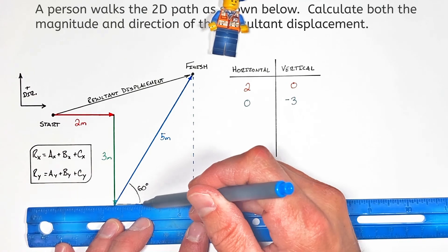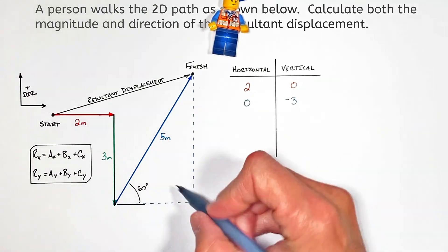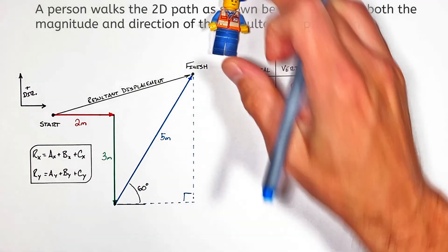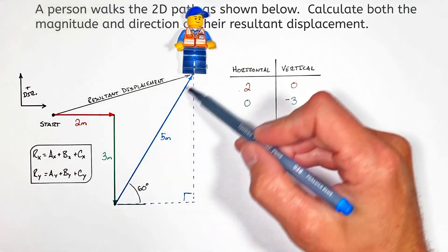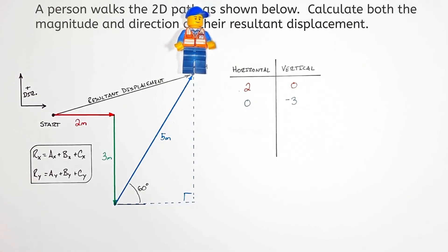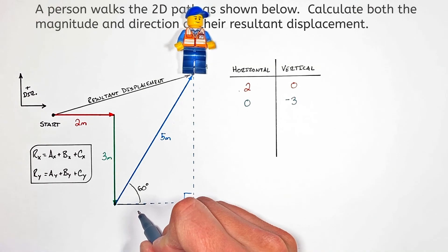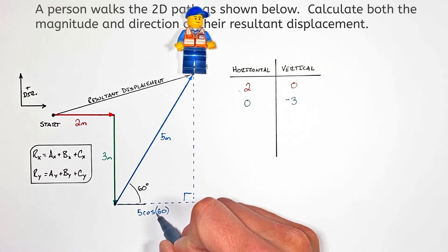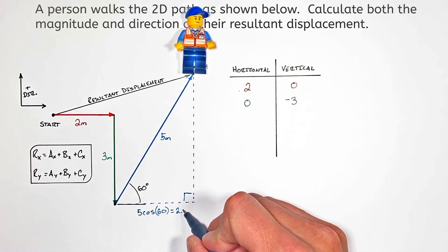The other two sides of the triangle are in the horizontal and vertical axes. Looking at this triangle, we have an adjacent and an opposite side which is going to allow us to break up this vector into its horizontal and vertical components. The adjacent side here has a length of 5 cosine 60, that works out to be 2.5.